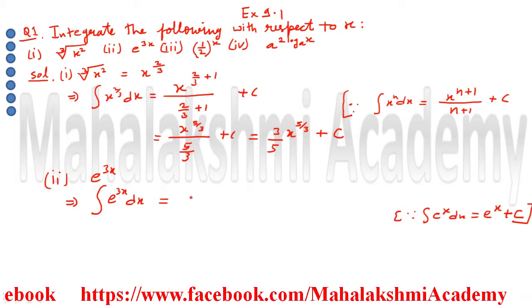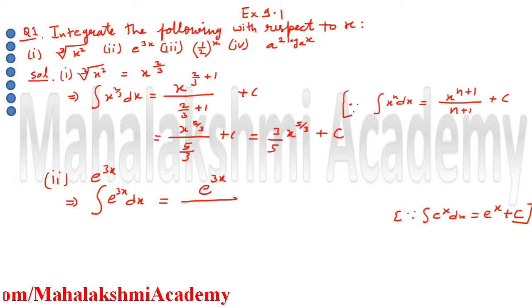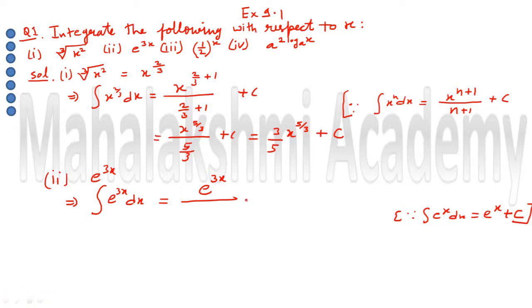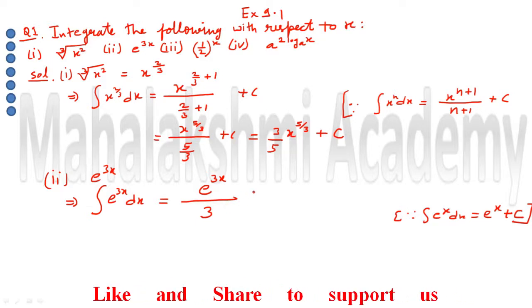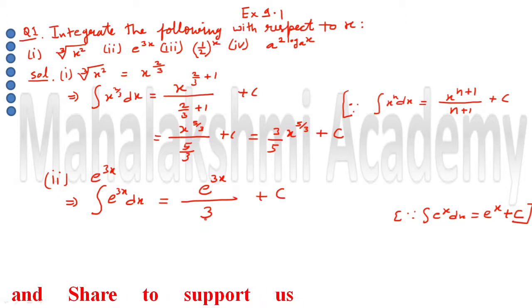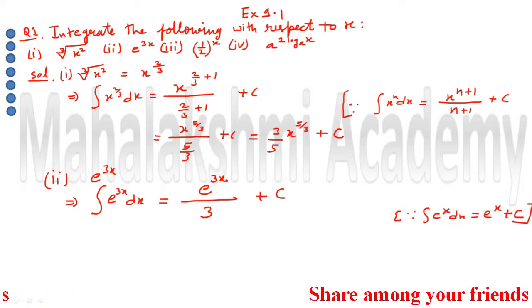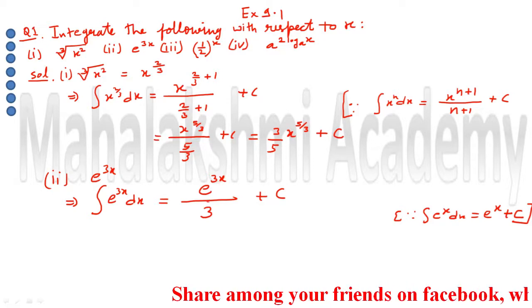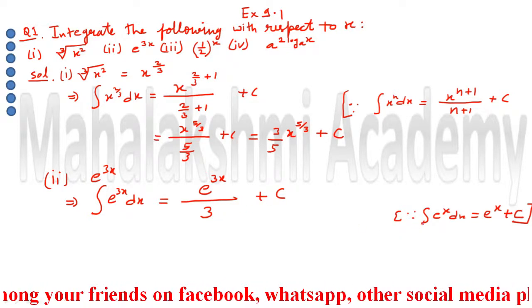So the integration of e to the power 3x remains e to the power 3x, but since the exponent is 3x, we differentiate 3x with respect to x, which gives 3. This 3 comes in the denominator due to the chain rule in integration. Therefore the answer is e to the power 3x divided by 3, plus integration constant. Write down the formula and that is sufficient.